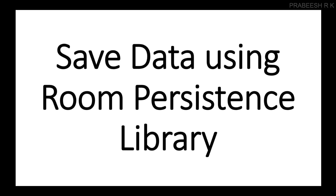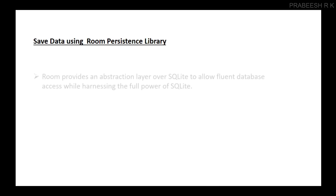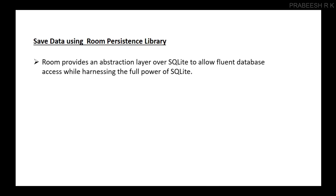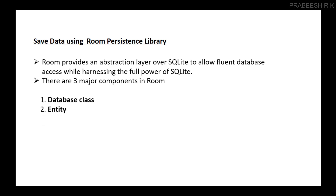So now we can start the presentation. Room provides an abstraction layer over SQLite to allow fluent database access while harnessing the full power of SQLite. There are three major components for Room Database: the first one is a Database class, the second one is an Entity — an Entity is nothing but a table in Room Database — and the third one is a Data Access Object.